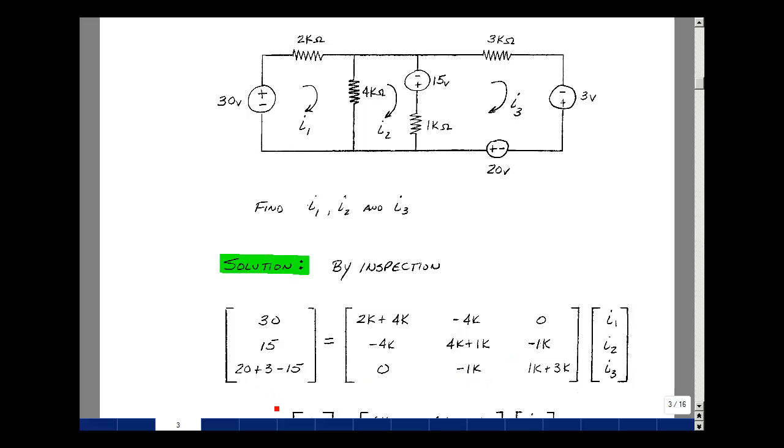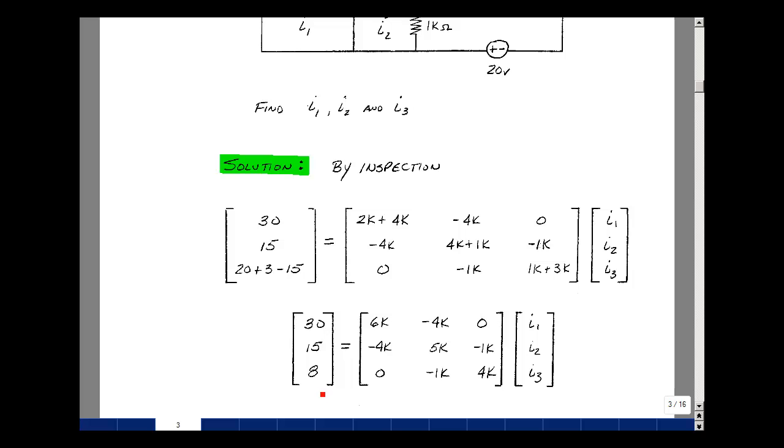Let's fill in this last entry over here, then. Go around the mesh counterclockwise. I see a plus 20, a plus 3, and then a minus 15. That's my technique by inspection. I'll just add all those terms together: 30, 15, and 8. 6k minus 4k, 0. Minus 4k, 5k, minus 1k. 0, minus 1k, and 4k.